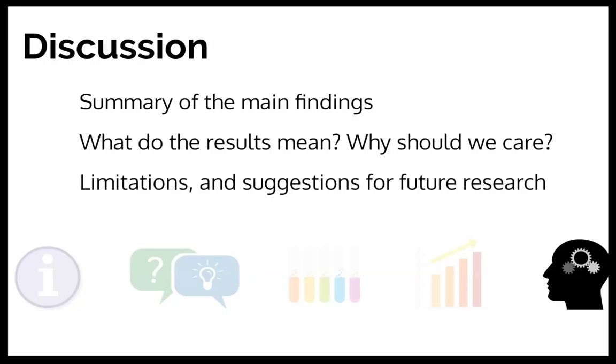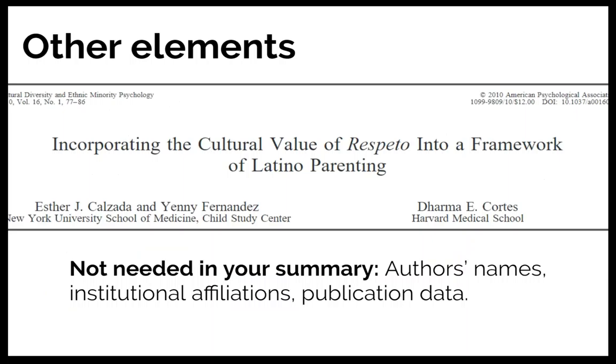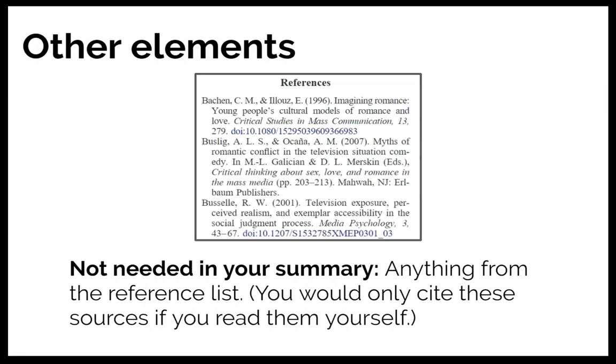You are going to find some other stuff in the article that you do not need to worry about for this assignment. When you are summarizing the article, you do not need to include the author's names, their institutional affiliations, publication data, that sort of thing. You also do not need to include anything from the reference list. You would only be citing these sources if you had read them yourself, which you are not required to do in this course.